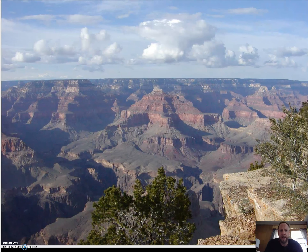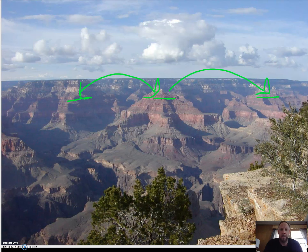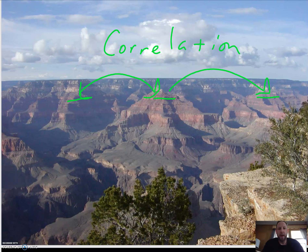Let's take a look at this picture. This is the Grand Canyon, and notice you see layers that connect through these different areas. These are correlated — these layers were once one layer. Correlation is connecting rocks that were once one rock layer. We can do this over hundreds of miles. Famous parks like Bryce Canyon, Zion National Park, and Grand Canyon all have the same rock layers but are about 300 miles apart, so we can see a correlation between them.